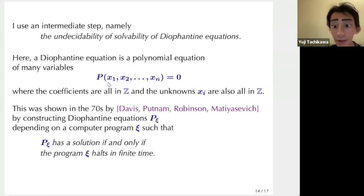And to do this, I use an intermediate step, namely the undecidability of solvability of Diophantine equations. Here, a Diophantine equation is a polynomial equation of many variables P(x1,...,xn)=0, where the coefficients are all integers and the variables xi are also all in the integers.